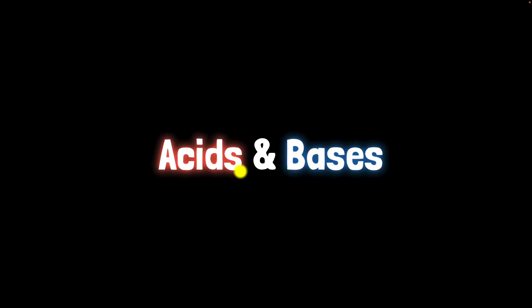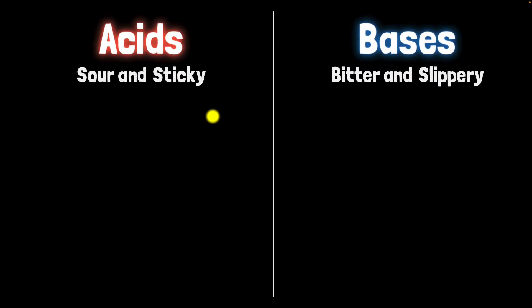You've probably heard of the terms acids and bases, but what exactly are they? Let's find out. We'll start by thinking of their most primitive definitions. Acids are substances that are sour and sticky. And substances that are bitter and slippery, we call them bases.